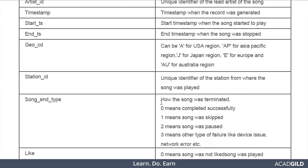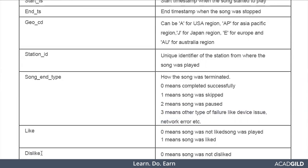Song end type describes how the song stopped. It is not always the case that you knowingly stop the song — sometimes due to a power failure or device issue, the song might stop. Zero means the song completed successfully. One means the song was skipped. Two means the song was paused. Three means another type of failure such as a device issue or network issue — for example, if internet is not available, the song stops, which falls under three. Next, the like field: zero means the song was not liked, one means the song was liked. Similarly, the dislike field: zero means not disliked, one means disliked.